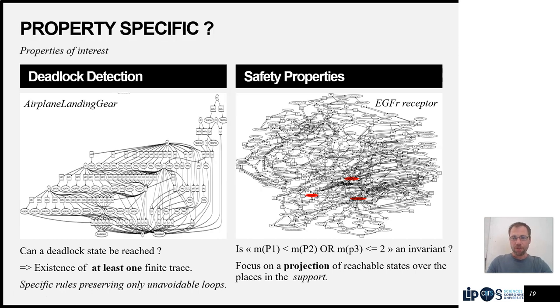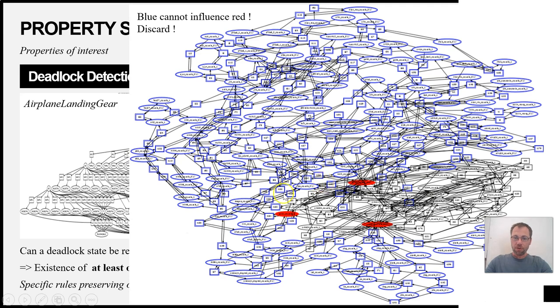For invariants, we have a different strategy. The idea is that my invariant is only looking at very few places of the net. And what we want is to look at the projection of reachable states over the places in the support of the invariant, the places p1, p2, p3 here. This is the only thing we're really interested in. If we look at this example, we can use a different algorithm called the prefix of interest to compute that the only places that can causally affect the markings of the three red places are the places in black here, this region of the net.